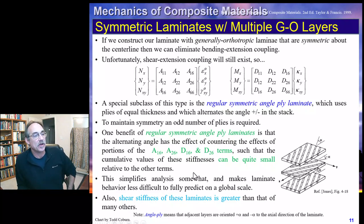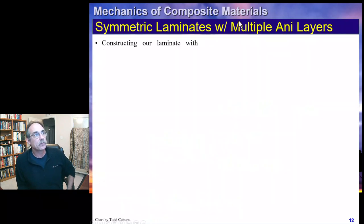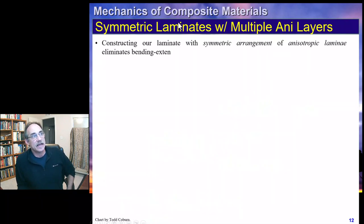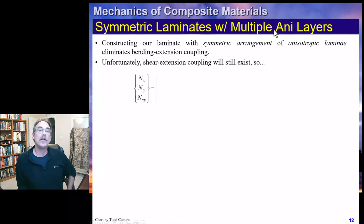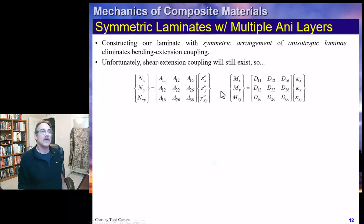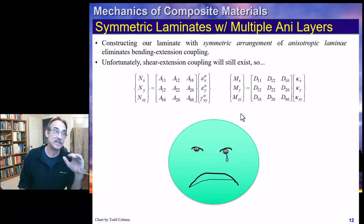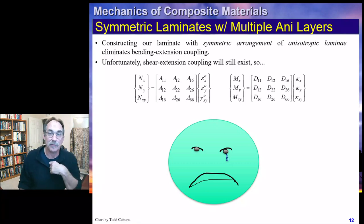A regular symmetric angle-ply laminate can give pretty good shear stiffness relative to other laminates. If we have a symmetric laminate with multiple anisotropic layers, we still have a zero B matrix since it is symmetric, but we will have shear-extension coupling.